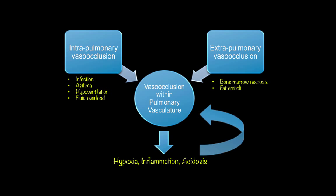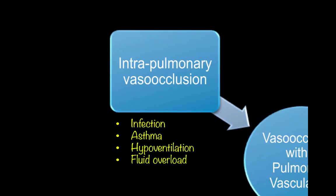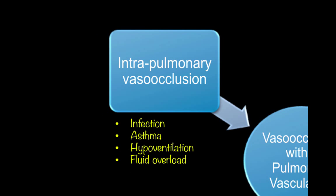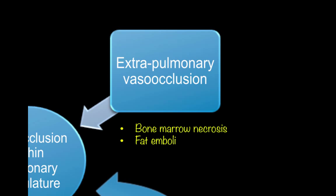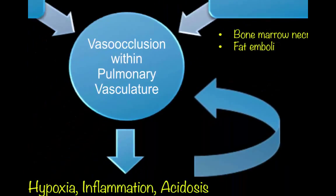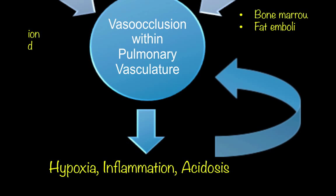Acute chest syndrome is the result of a complicated and multifactorial process, which starts with vasoocclusion. There are two types: intrapulmonary and extrapulmonary. Intrapulmonary vasoocclusion can occur from asthma, hypoventilation, fluid overload, or infection — with chlamydia being the most common species. Extrapulmonary vasoocclusion can occur from bone marrow necrosis or fat emboli. Vasoocclusion within the pulmonary vasculature results in hypoxia, release of inflammatory cytokines, and acidosis, which in turn feeds back and causes more vasoocclusion.